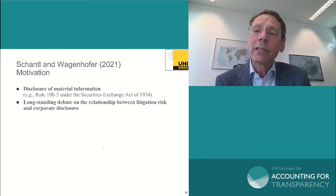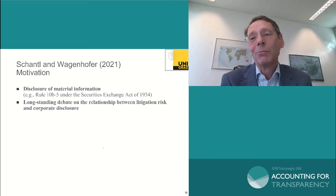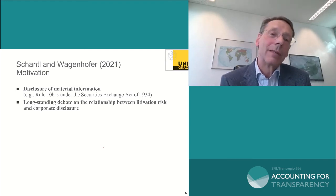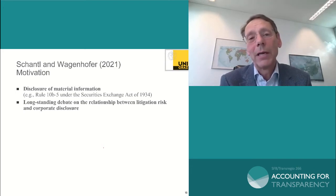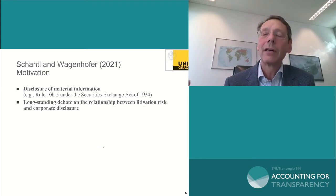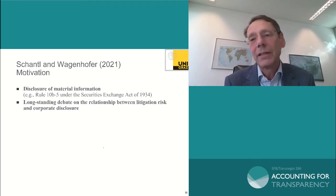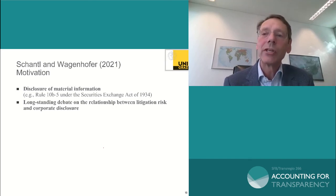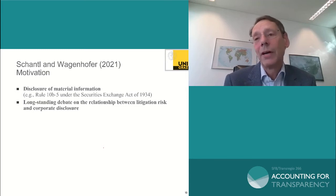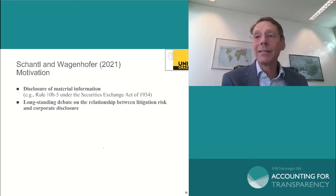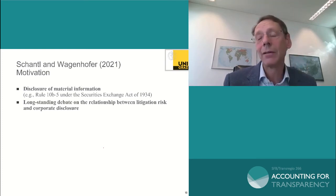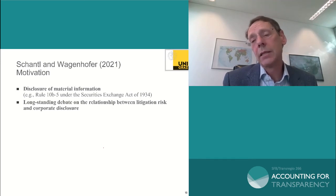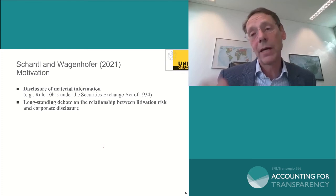Once we do voluntary disclosure, you may ask why litigation would be a problem — because it's voluntary. But in reality there's an in-between: disclosure of material information by listed firms. In the US, this would be Rule 10b-5. If you have material information you're pretty sure has a price effect, you have to disclose it even if it doesn't show up in general disclosure requirements. This is a very general requirement, and people litigate on that. If you have bad news and you didn't disclose it and it comes out later, people think: I paid too high a price for shares I bought. So they litigate to get compensation for their presumed damage.